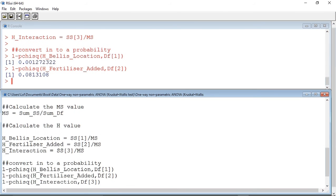The probability value for the fertilizer added is 0.08. This is above our 0.05 transition probability, suggesting we cannot reject the null hypothesis and that fertilizer has made no difference to the daisy density.